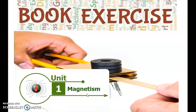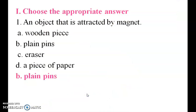Good morning students. Today we are going to see the book exercise of magnetism. First one — choose appropriate answer. An object that is attracted by a magnet: the answer is plain pins.